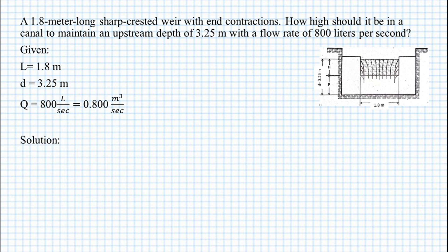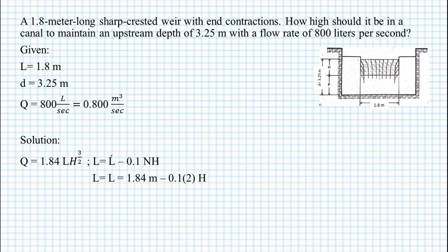We are going to use the equation: flow rate is equal to 1.84 times the length of the crest multiplied by head raised to the power of 3/2. Since our length is equal to the measured length of the crest minus 0.1 times N, or the number of N-contractions times the measured head, we plug in the values.